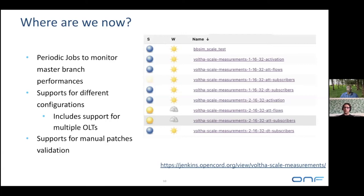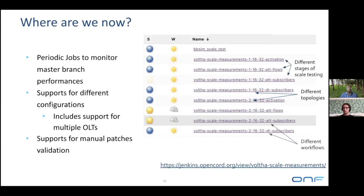We run this test on the master branch every four hours for a set of different configurations. We support different topologies — as you can see, every job is named with a similar scheme: the number of OLTs, the number of PON ports, the number of ONUs, followed by the workflow we are testing and up to which point we are testing it. We also support the testing for multiple OLT devices in the same Volta instance.